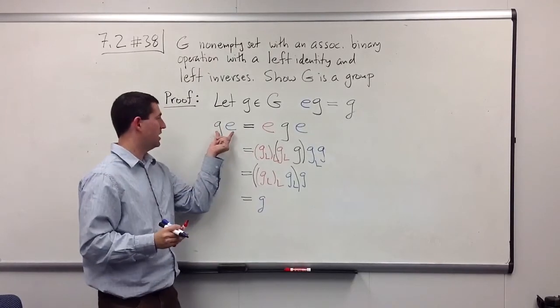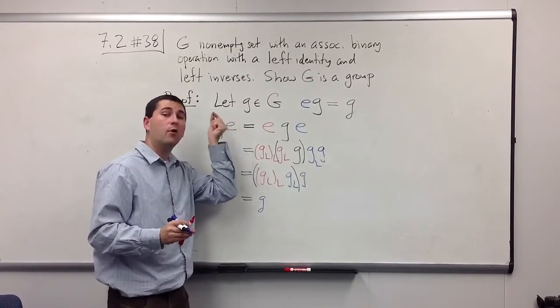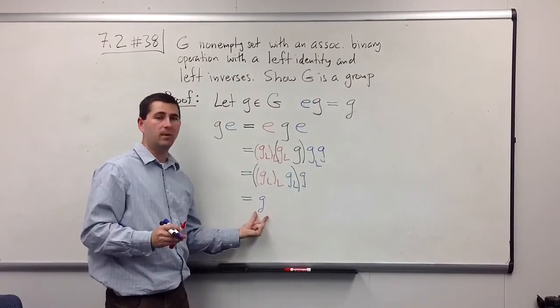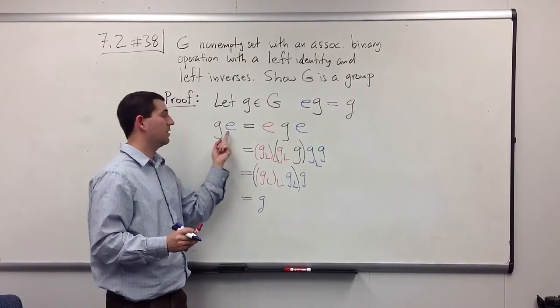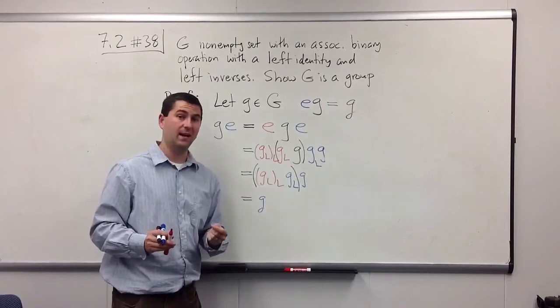And so we've proved that g times e, where now our e is on the right side, is still going to be g. And so e is not just a left identity. It's also a right identity.